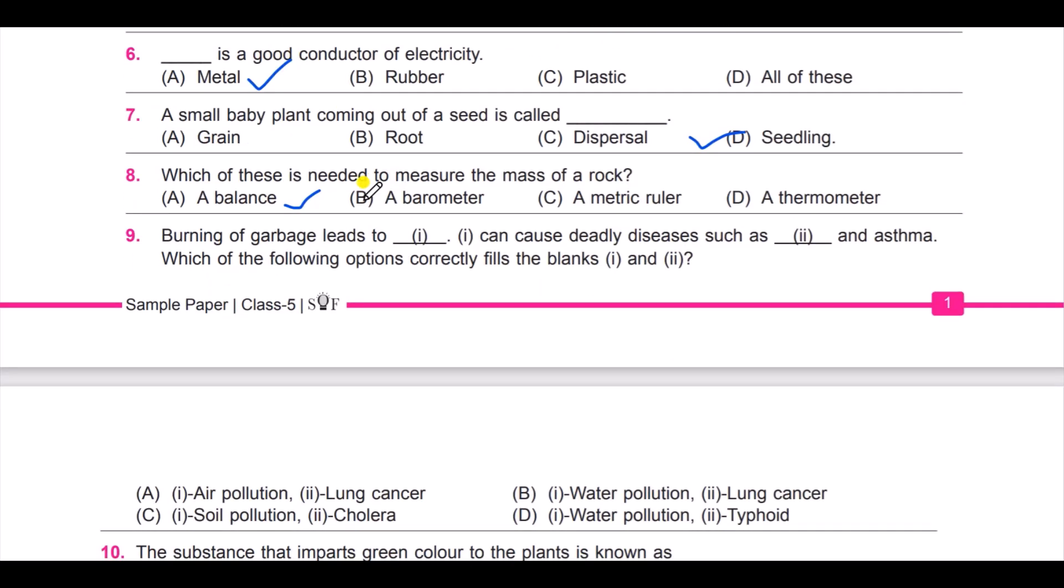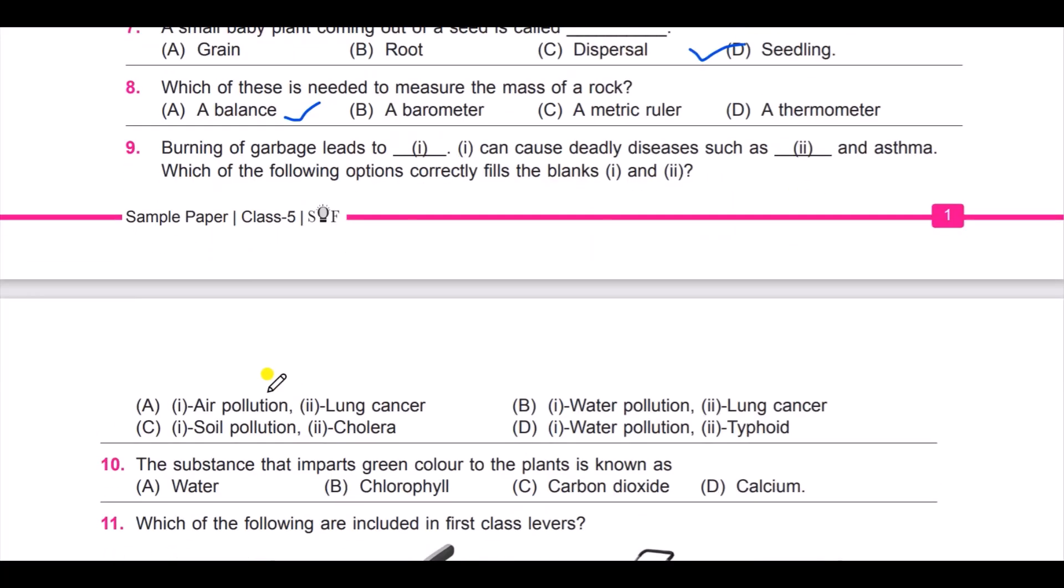Next question: in this question you have two fields. Burning of garbage leads to dash, which can cause deadly diseases such as dash and asthma. Which of the following options correctly fills the blanks one and two? Look at the options now: option A, air pollution and lung cancer; B, water pollution and lung cancer;